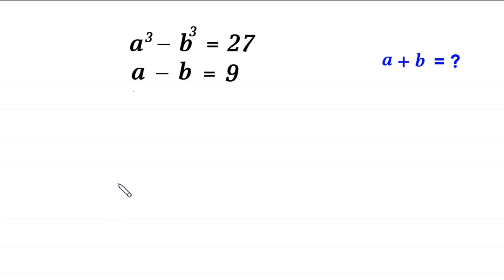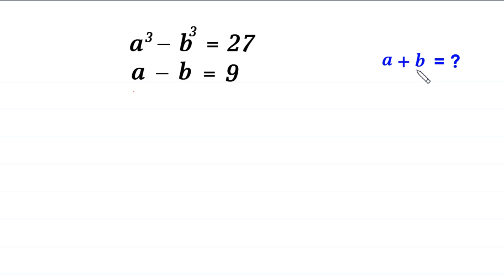Hello everyone, you are welcome to how to solve this very nice system of equations. A cubed minus B cubed is equal to 27, and A minus B is equal to 9. Our job is to find all possible values of A plus B. So let's start.